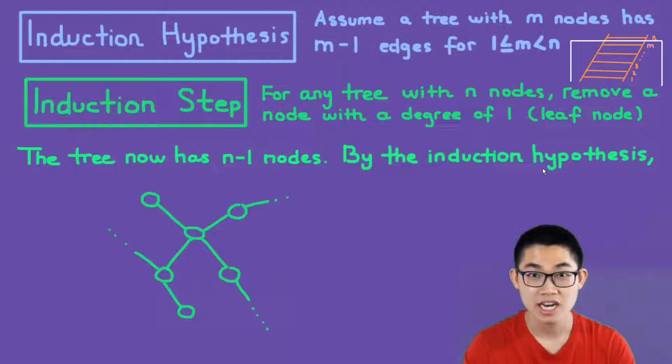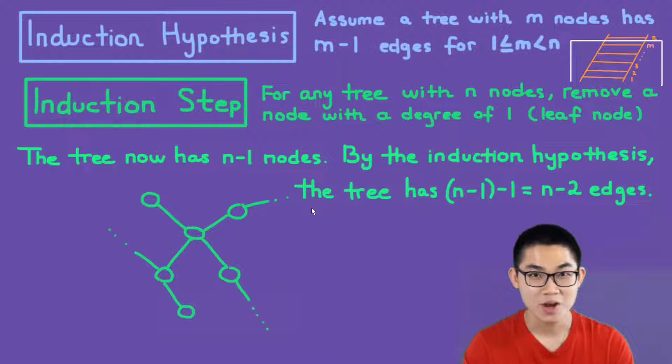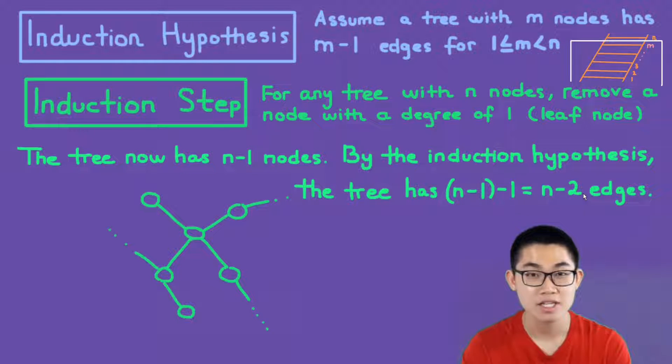So by the induction hypothesis, we know that the statement is true inside the box. So the tree has n minus 1 nodes, so it has n minus 2 edges by the induction hypothesis.